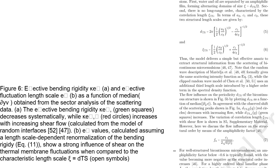The effective fluctuation length scale and effective bending rigidity are shown as a function of the median velocity gradient. The effective bending rigidity decreases systematically in the main direction and increases in the perpendicular direction with increasing shear flow, and the effective fluctuation length scale shows a strong influence of shear on the thermal membrane fluctuations compared to the characteristic length scale.